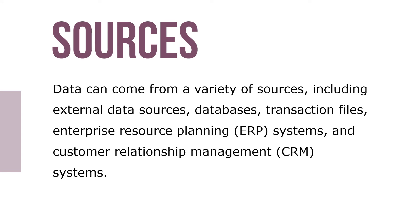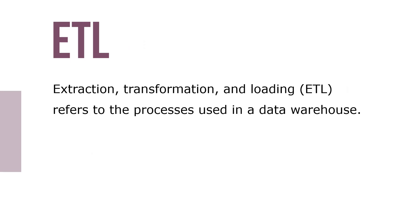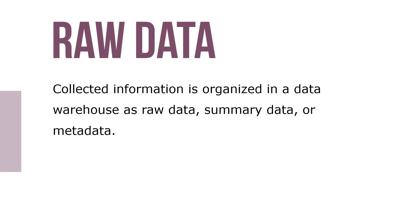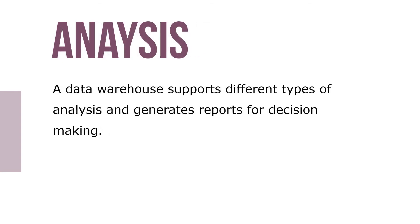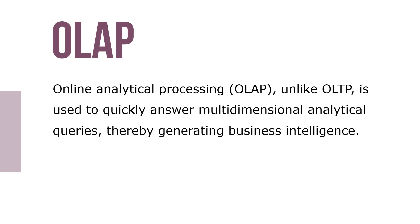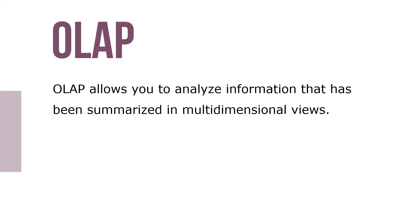Data can come from a variety of sources including external data sources, databases, transaction files, enterprise resource planning (ERP) systems, and customer relationship management systems. Extraction, transformation, and loading (ETL) refers to the process used in a data warehouse. Collected information is organized as raw data, summary data, or metadata. Online analytical processing (OLAP), unlike OLTP, is used to quickly answer multidimensional analytical queries, thereby generating business intelligence. OLAP allows you to analyze information summarized in multidimensional views, and data mining analysis is used to discover patterns and relationships.